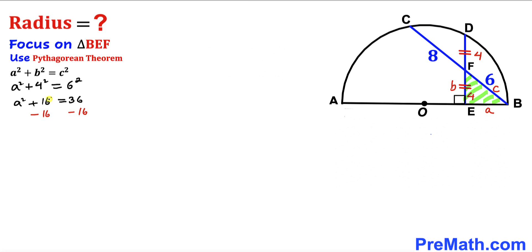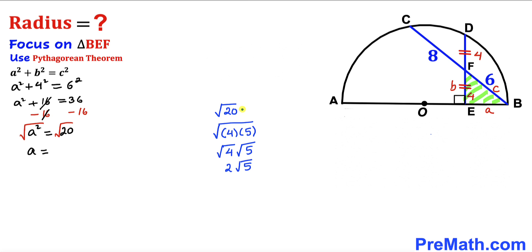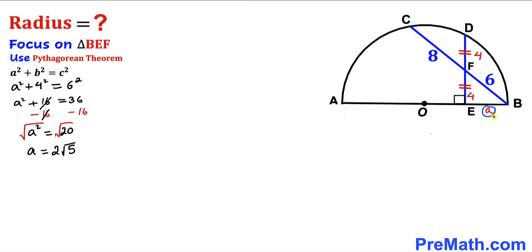Let's subtract 16 from both sides, giving us a squared equals 20. Taking the square root of both sides, a equals the square root of 20, which simplifies to 2 times the square root of 5. So our side a — which is EB — turns out to be 2√5 units.